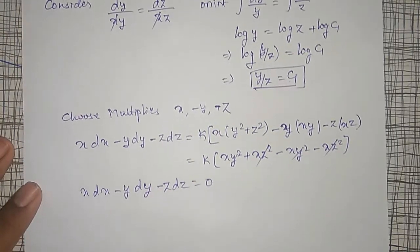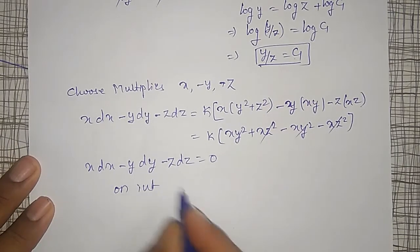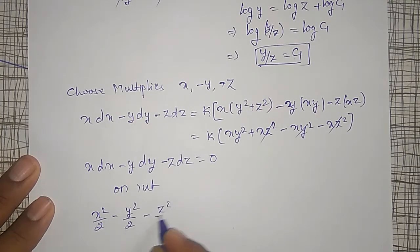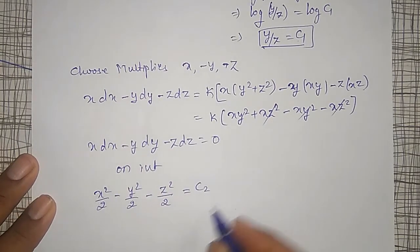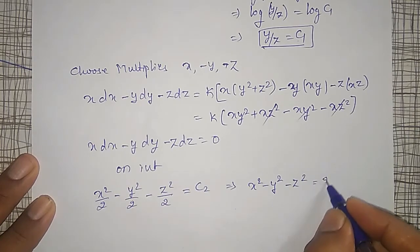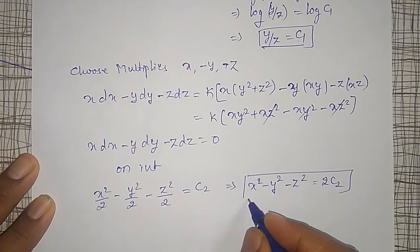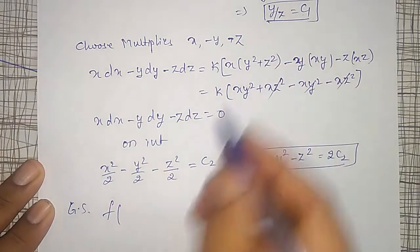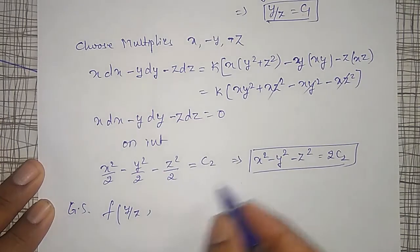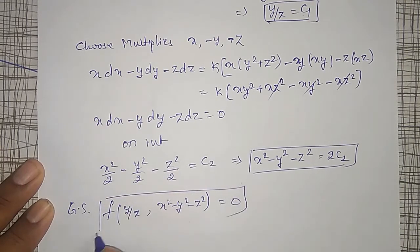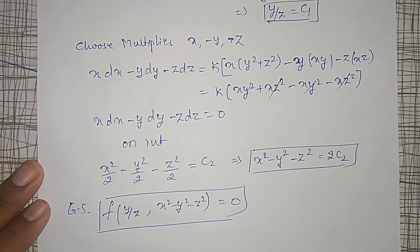Therefore x·dx − y·dy − z·dz = 0. This is integrable. On integration: x²/2 − y²/2 − z²/2 = constant, or x² − y² − z² = c₂. The general solution is F(y/z, x² − y² − z²) = 0, which is the required solution of the PDE.